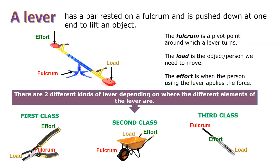There are three different classes of lever depending on where the different elements of the lever are. First class: the fulcrum is located between the force and the load. Second class: the load is located between the fulcrum and the force. Third class: the force is located between the fulcrum and the load.